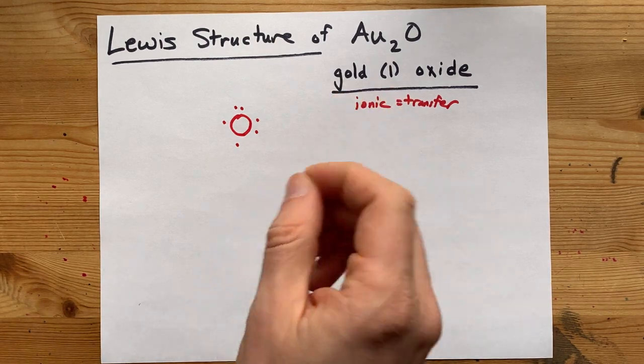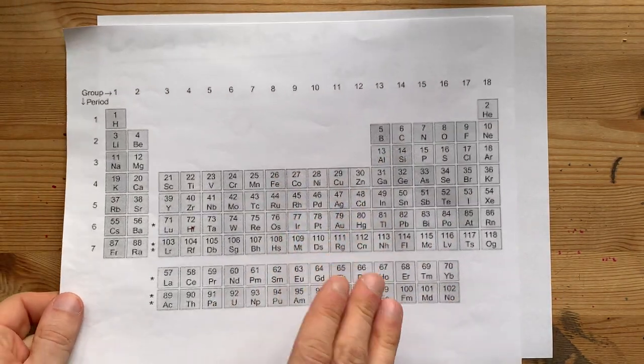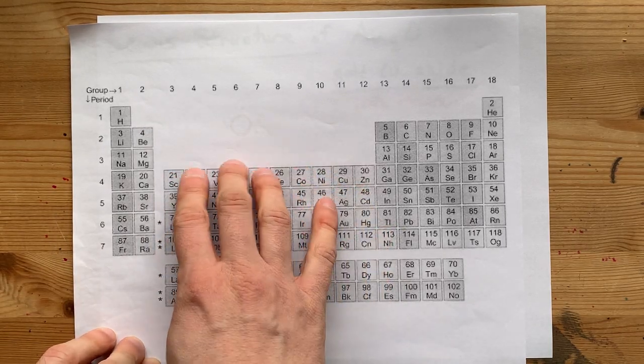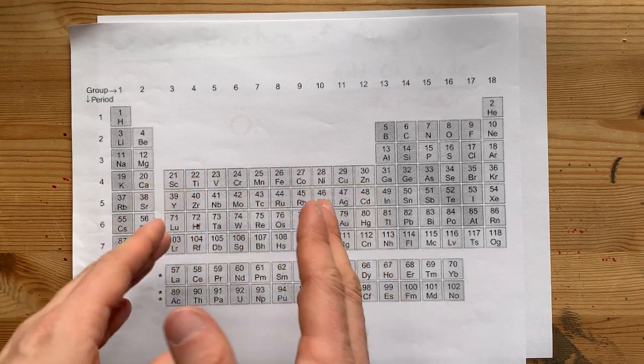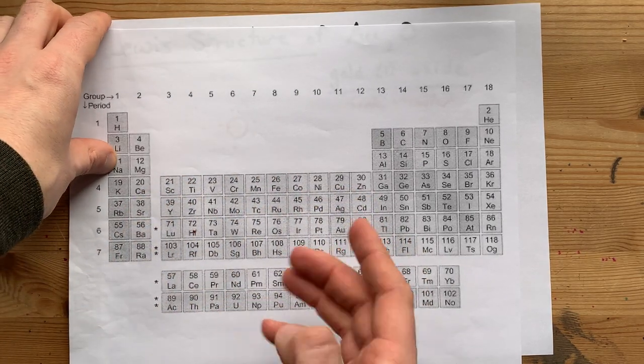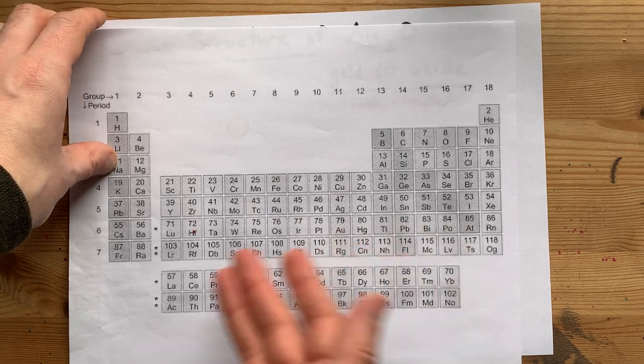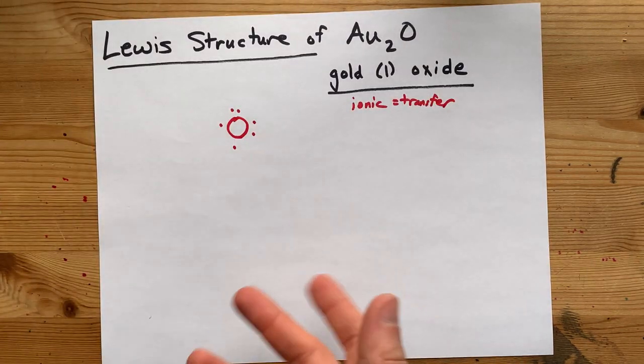Gold, on the other hand, is a little trickier to know how many electrons to draw. Here in the transition metals, most of these atoms can have more than one possible charge. Gold, for example, can have a charge of either one or three. How do we know which one gold has in this case?